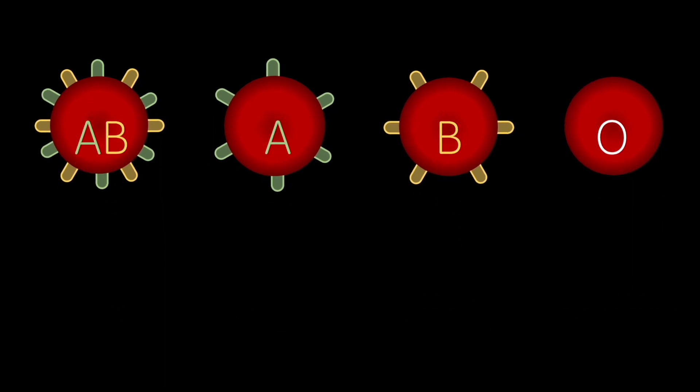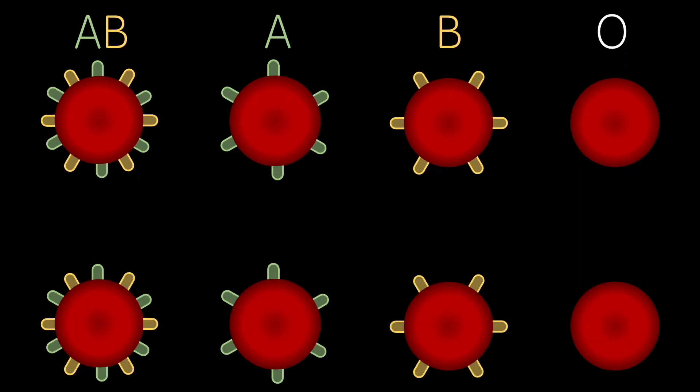From this information, we can see that type O patients can receive blood from only type O donors as they have anti-A and anti-B antibodies.